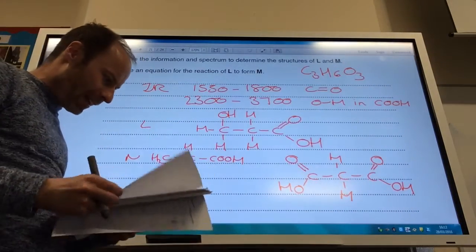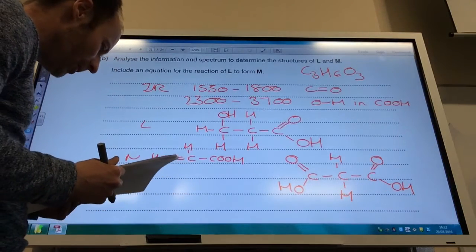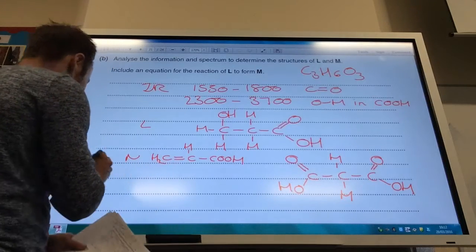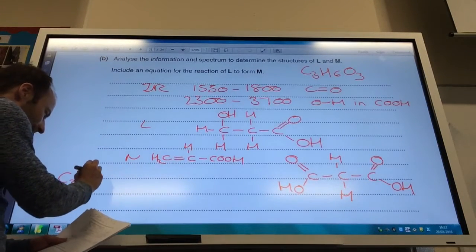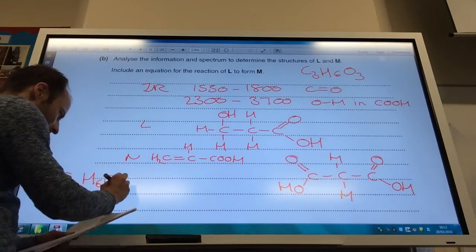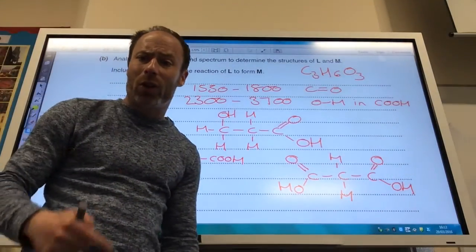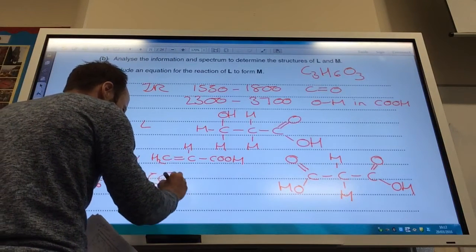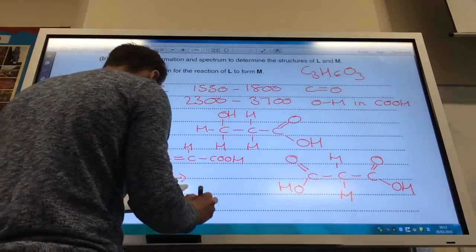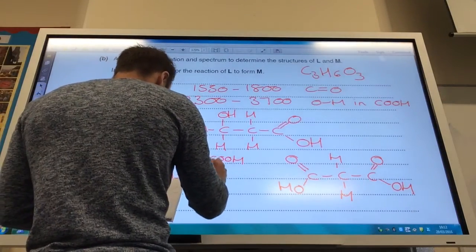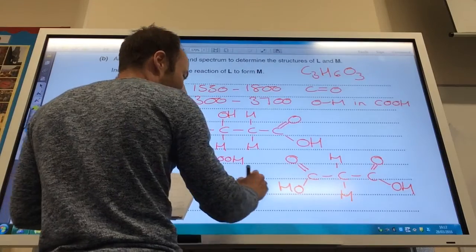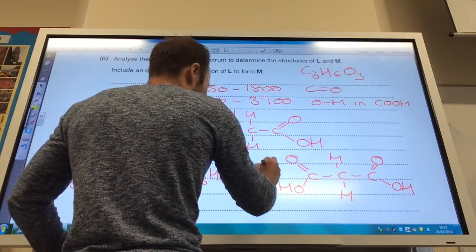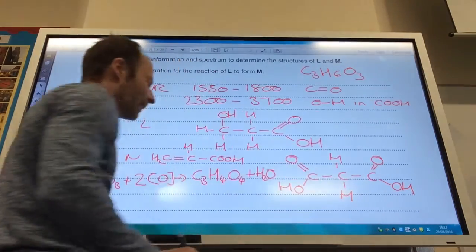I think as well it wants an equation for the reaction of L to form M. So I'm going to start with C3H6O3. It goes from a primary alcohol to a carboxylic acid. So I need to add two square bracket O's. And that's going to give me C3H4O4, and it's also going to give me water as well.